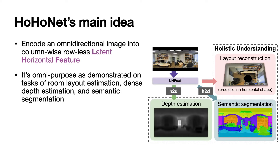HohoNet's main idea is to encode a 360 omnidirectional image into a column-wise row-laced latent horizontal feature. More specifically, an image column is encoded into only a latent vector, instead of encoding a latent vector for every pixel. By such a compact representation, we can achieve high computational efficiency even for high-resolution 360 images.